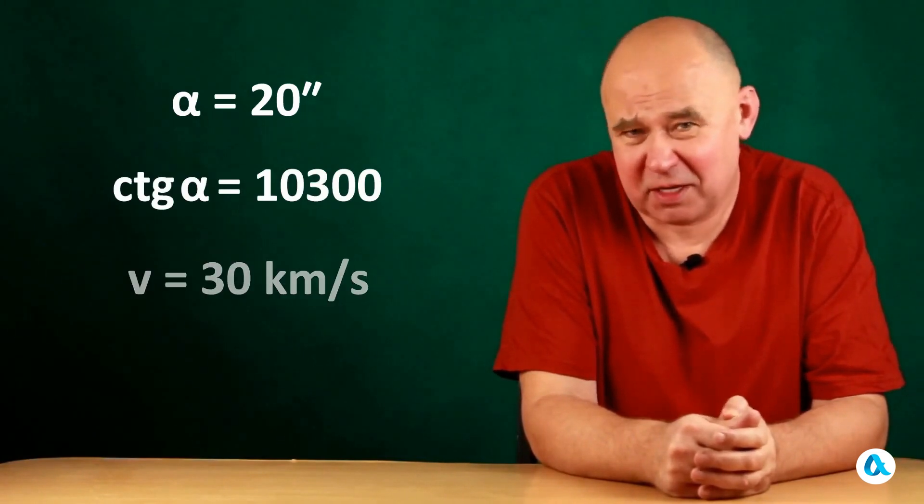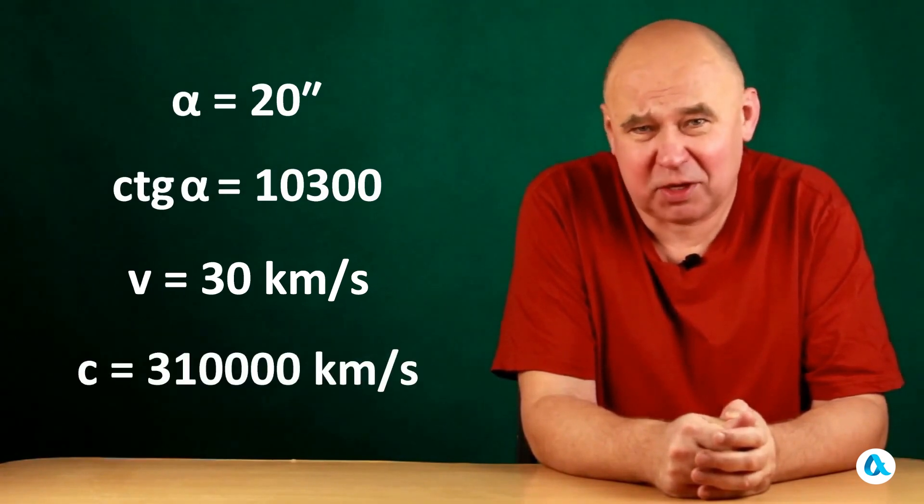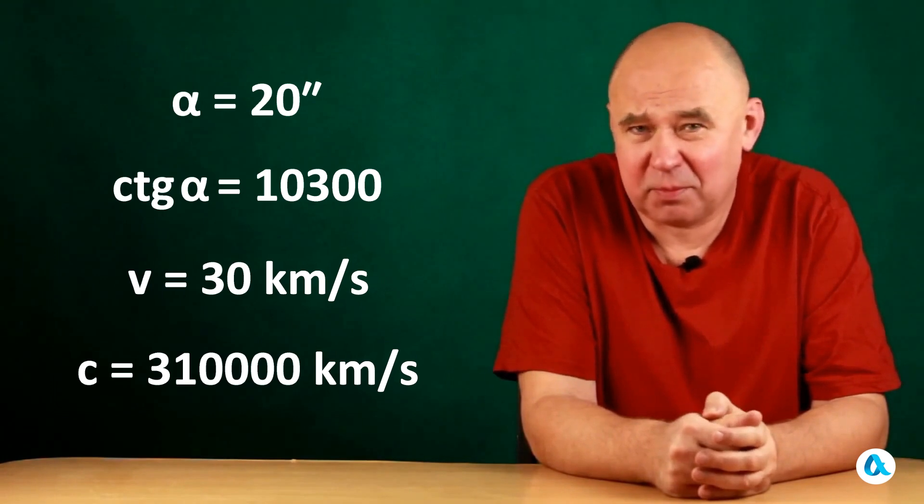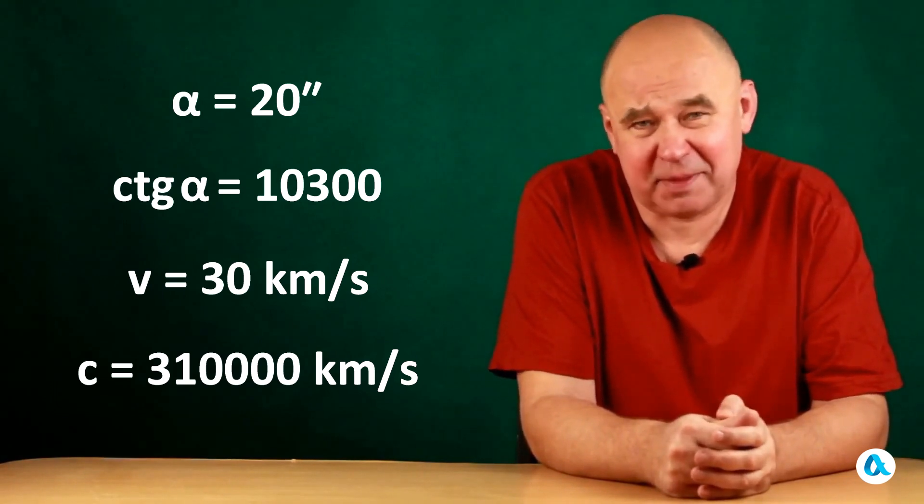But we know that the speed of the Earth is 30 kilometers per second. We multiply by this number and get 310,000 kilometers per second. Three percent higher than the accurate modern data. That's a pretty good result.